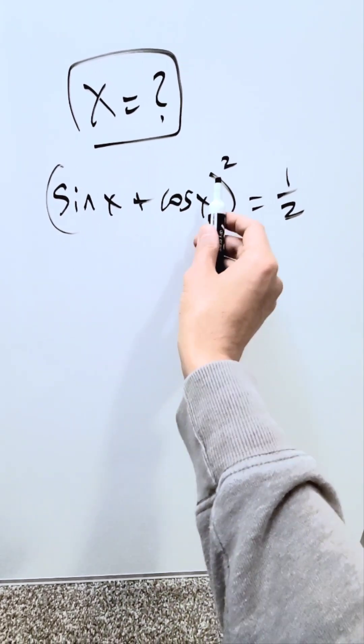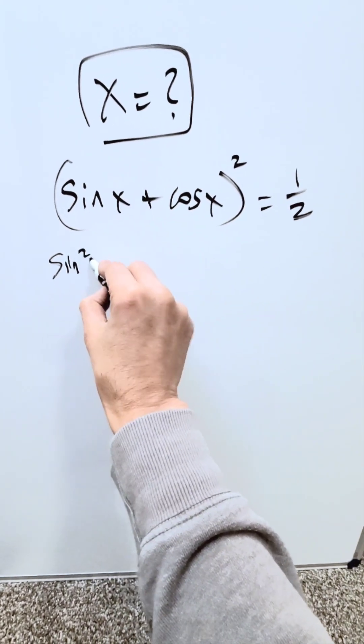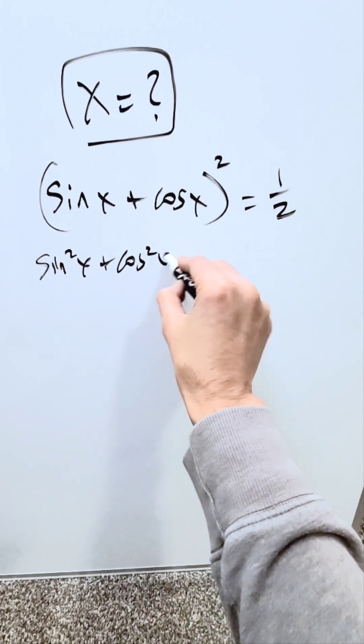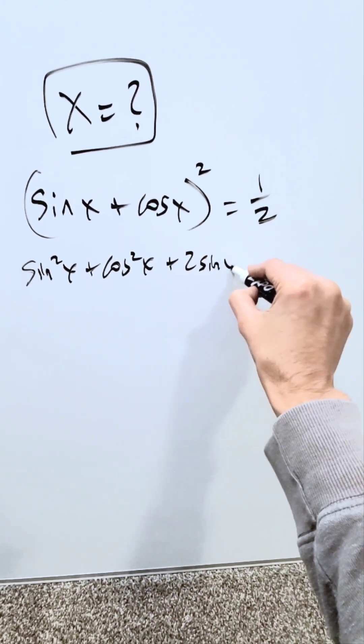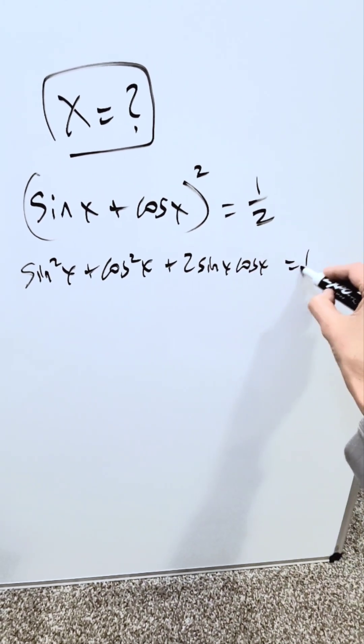Start by expanding this. You have a plus b whole square to be equal to a square plus b square plus 2ab and that's exactly what it is equal to 1 over 2.